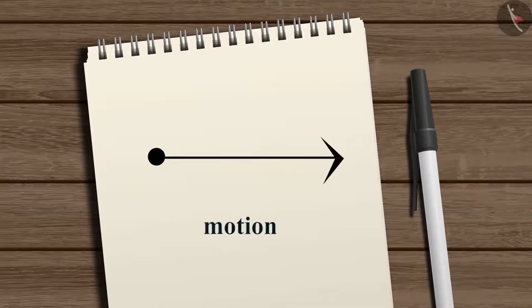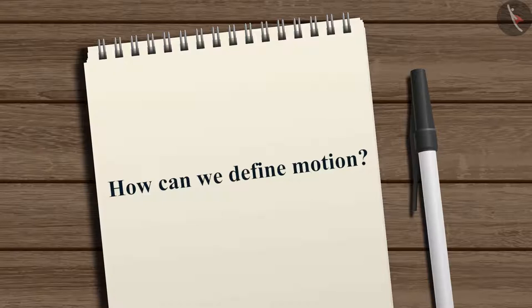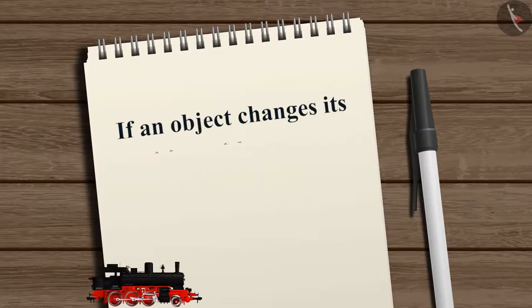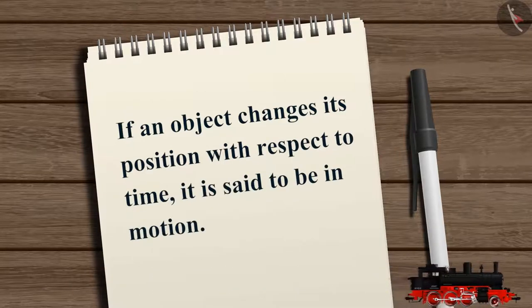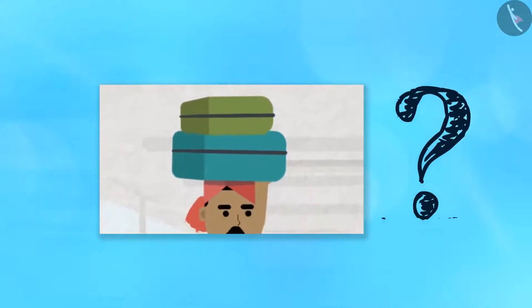More scientifically, how can we define motion? If an object changes its position with respect to time, it is said to be in motion. But sometimes it isn't simply clear whether the object is in motion or not.